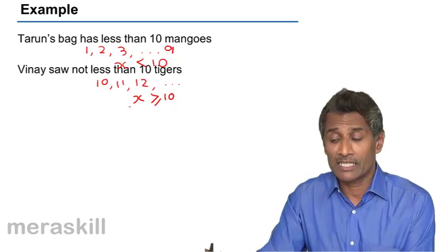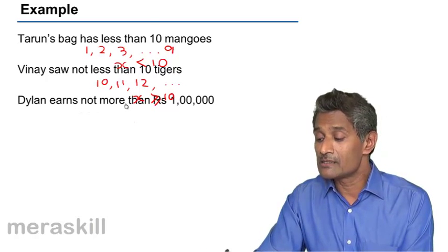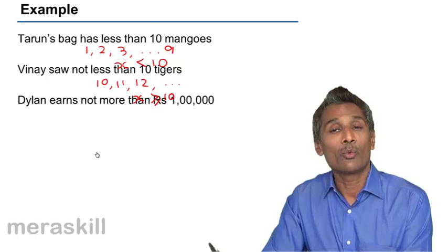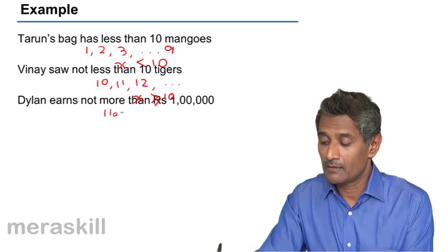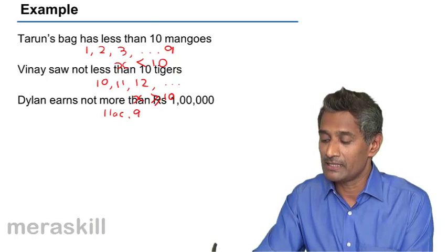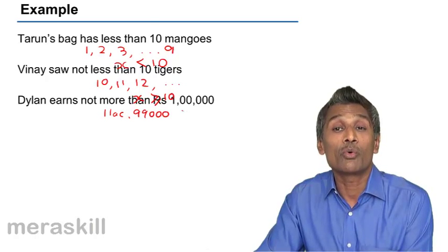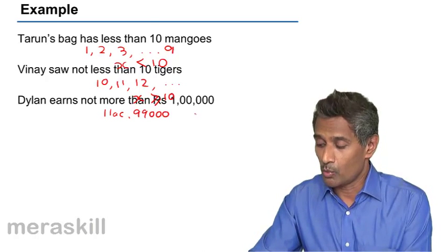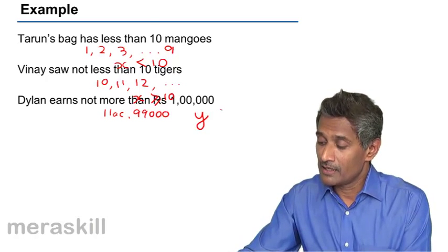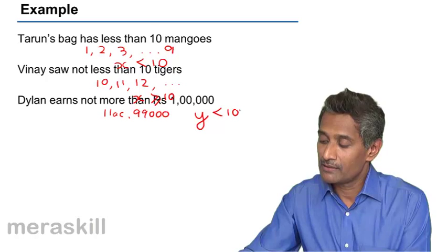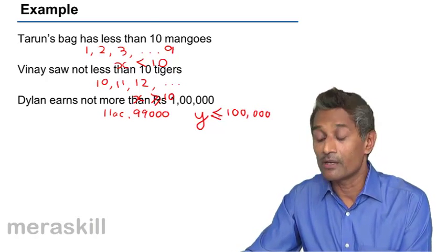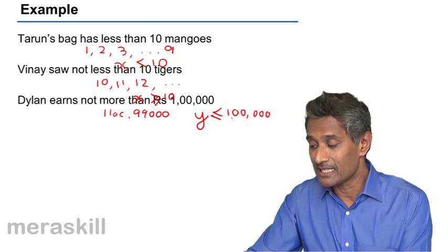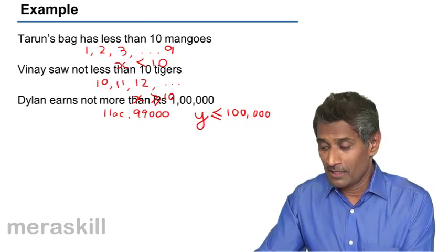Next example: Dylan earns not more than rupees one lakh. This means he could be earning one lakh or anything less — maybe 99,000 or anything — but definitely not more than one lakh. Suppose Dylan's earnings are y. This translates to y ≤ 1,00,000, meaning y is less than or equal to one lakh.